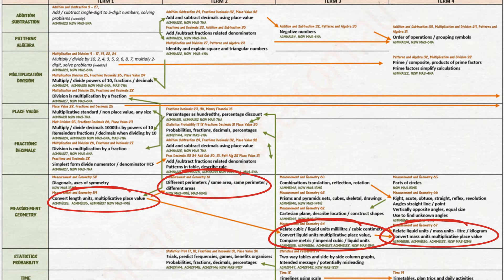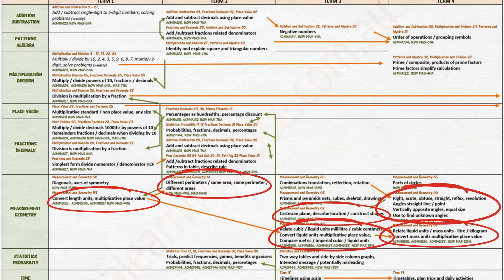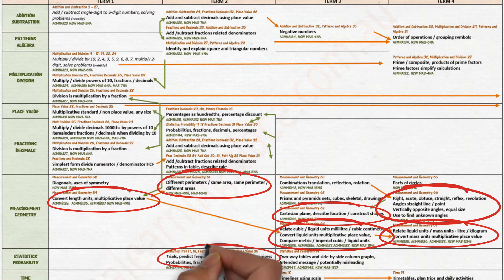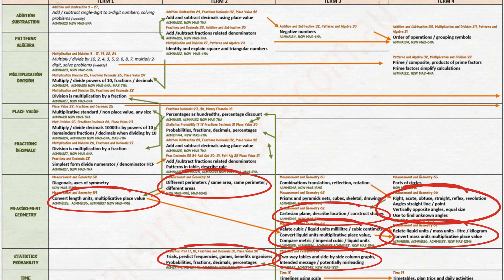Students extend their understanding of number lines to include Cartesian planes, and extend their understanding of angles to include angles at a straight line or a point and vertically opposite angles, and use their understanding to find unknown angles. They conduct trials to predict frequencies and create two-way tables and side-by-side column graphs, and investigate potentially misleading representations of data.